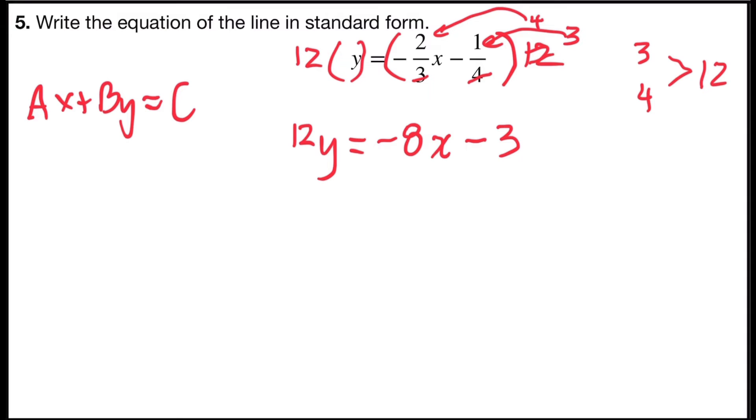And now all I have to do is rearrange my terms. So the y term is on the left side as it needs to be, but my x term is on the right side. So I'm going to add eight x to both sides so that my terms are on the proper side. On the left side, that would give me eight x plus twelve y equals, on the right side, negative eight x plus eight x is zero, and zero plus negative three is negative three.